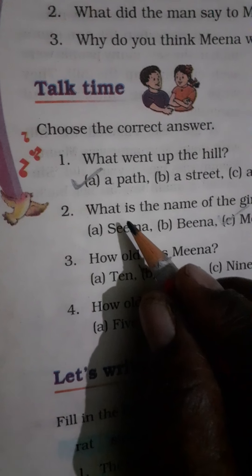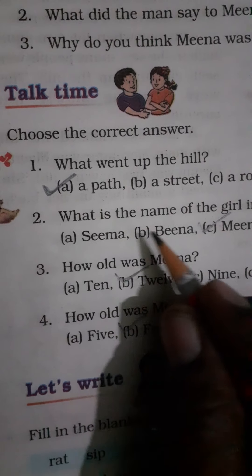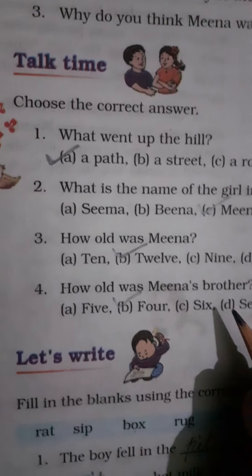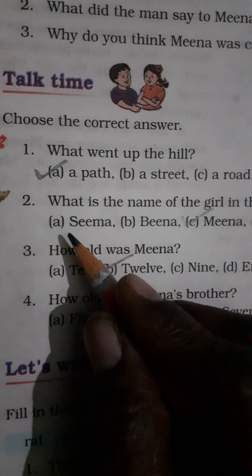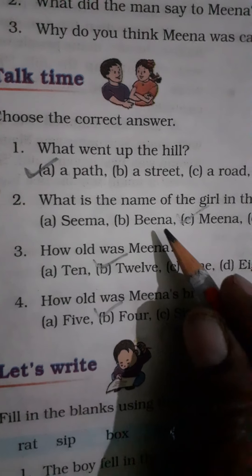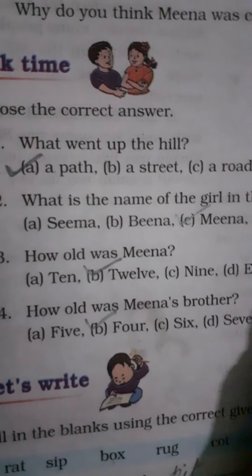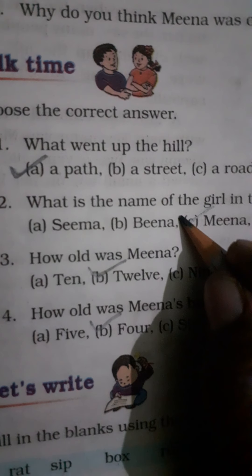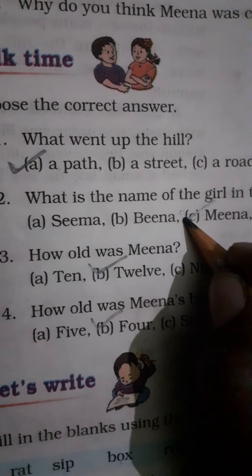Second multiple choice question: What is the name of the girl in the story? The options are Sima, Beena, Meena, and Nina. The answer is Meena — the girl's name was Meena. Tick Meena.